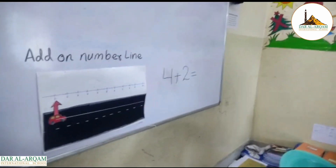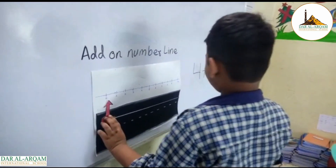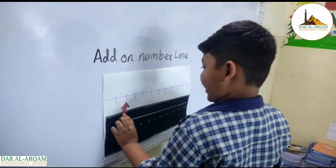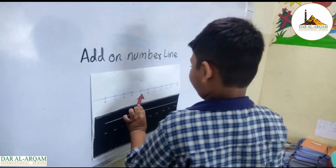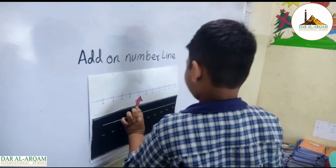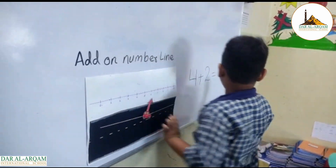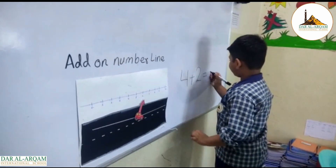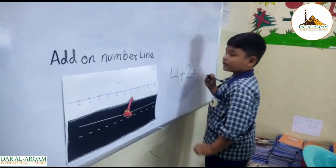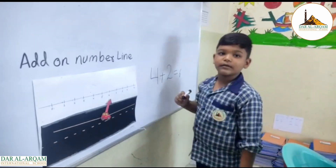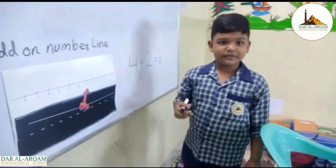Come and add this on number line. 3, 4, 5, 6, and 6. Avran, what is the answer? 6. Okay, very good. Go.